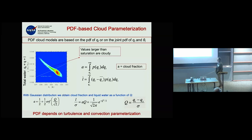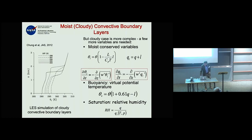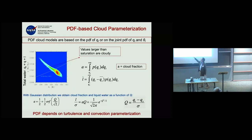Here's an example from a large-eddy simulation of a shallow convection case. If you look at the PDF or histogram of θ_L and Q_T (total water) in the LES, you can clearly see that some points are above the saturation line — those are inside the cloud — while most are outside in the clear-sky area.